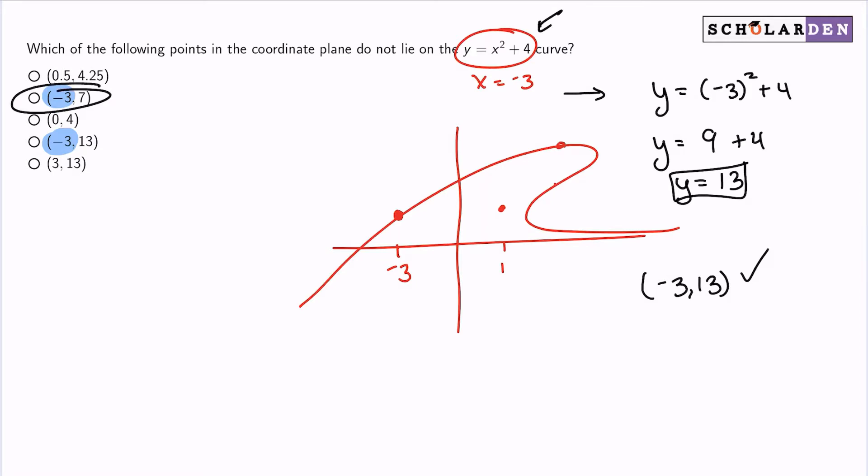And so when we're looking at b, that is not 13. So that's my answer because it is not on the curve.